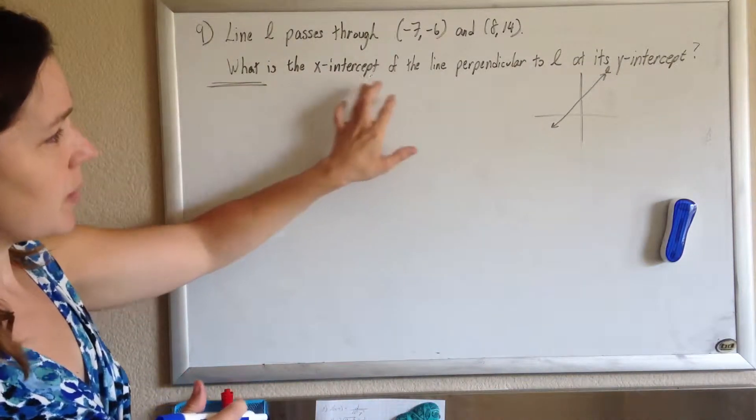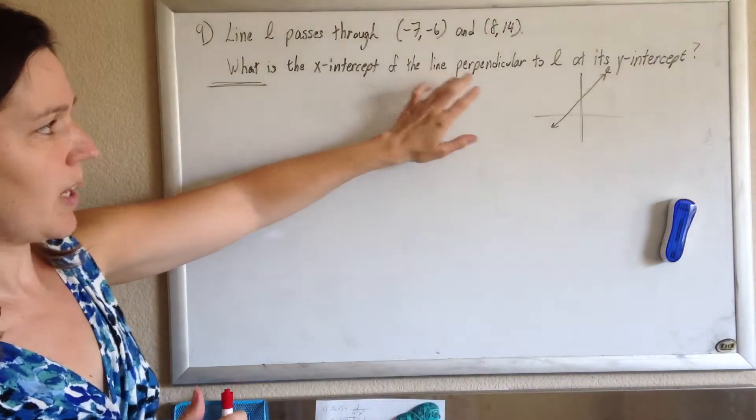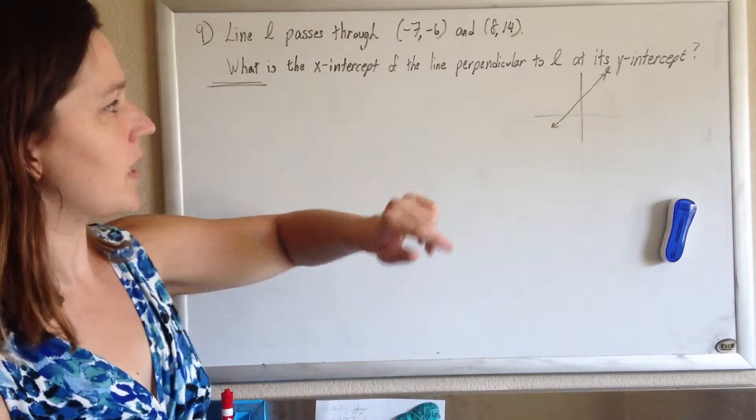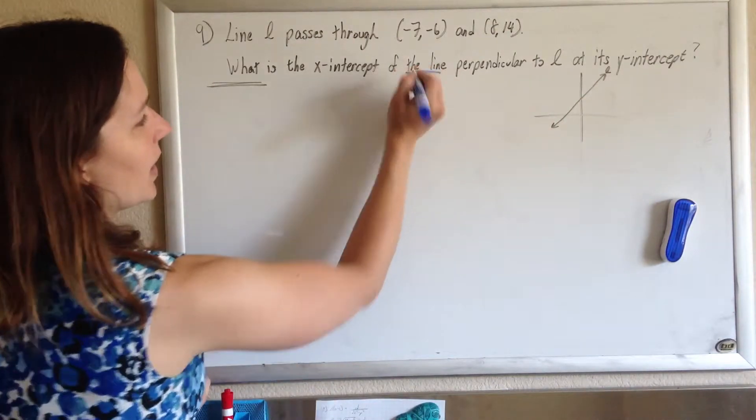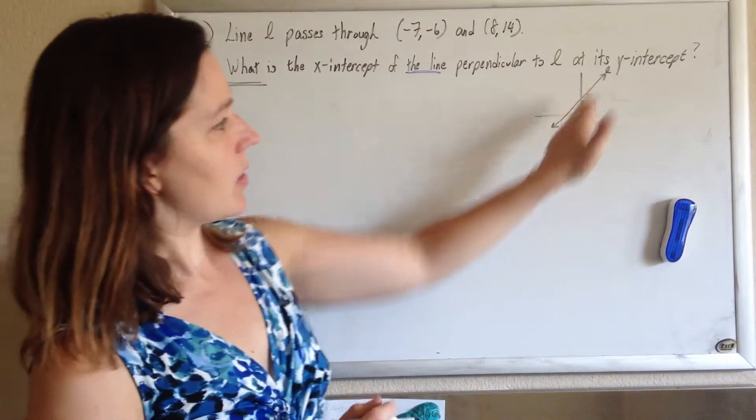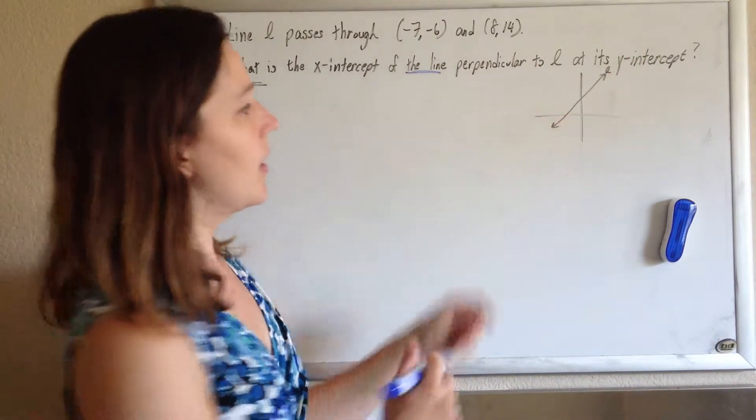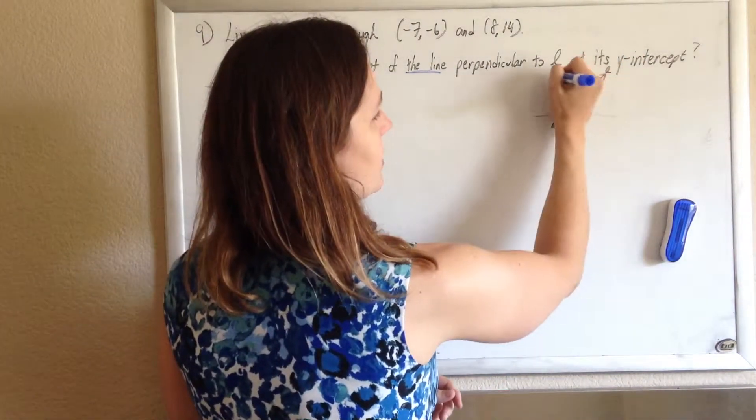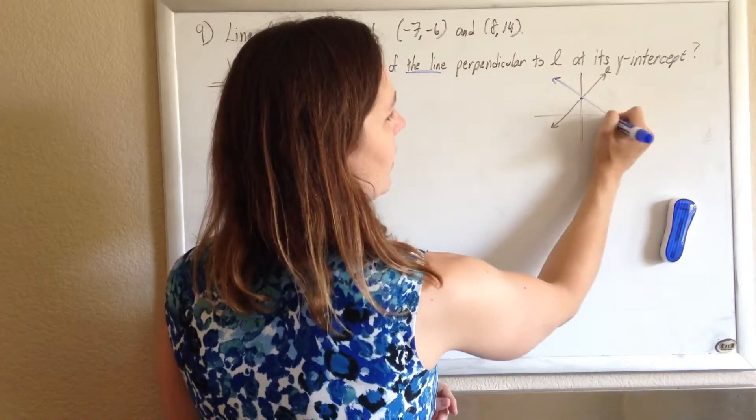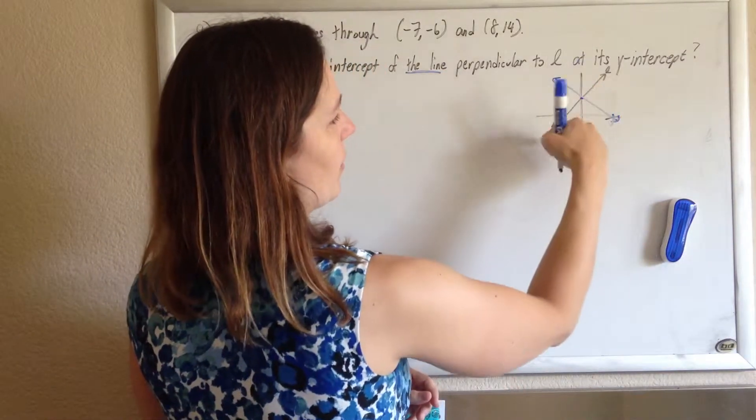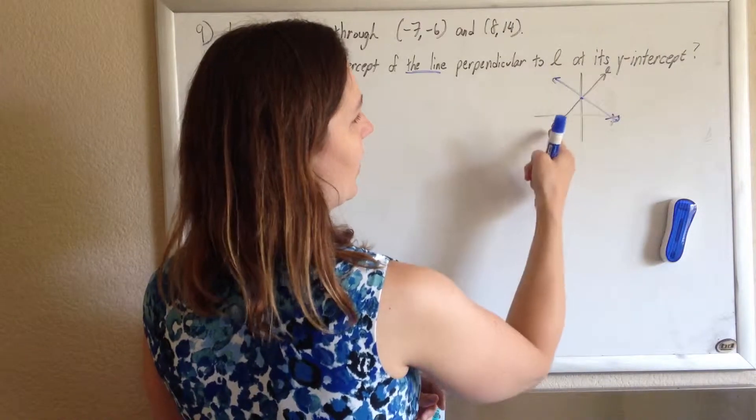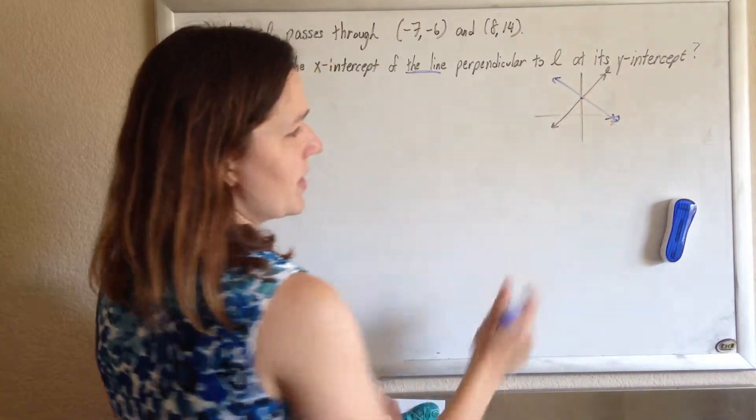What is the x-intercept of the line perpendicular to L at its y-intercept? So we have another line that's perpendicular to our original line at its y-intercept. We want to know the x-intercept of this new line, which is perpendicular to L at its y-intercept.